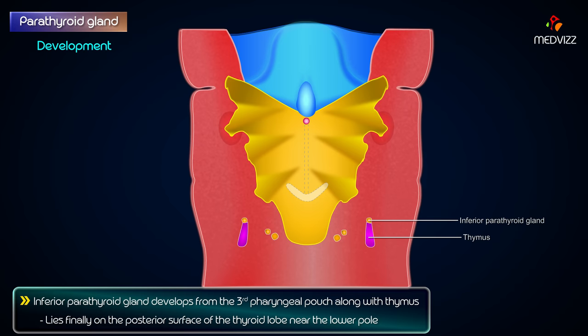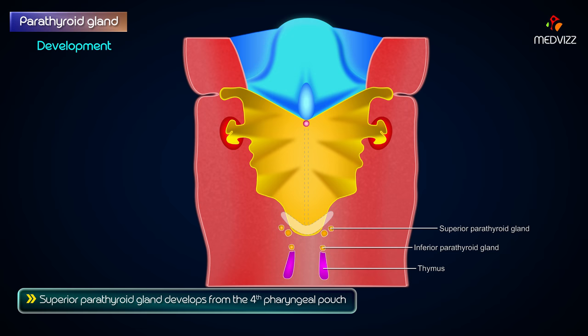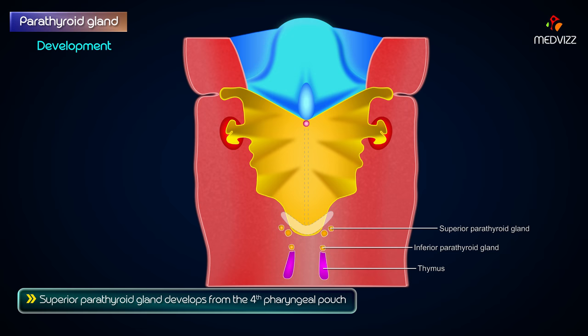The superior parathyroid gland develops from the fourth pharyngeal pouch and finally lies on the posterior surface of the thyroid lobe at the level of the isthmus.